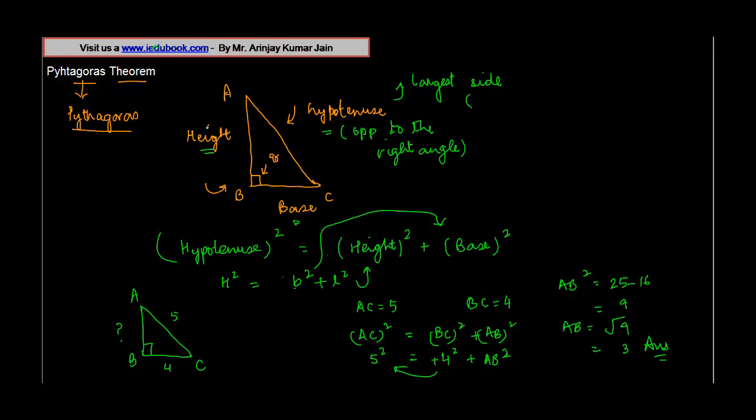So using the Pythagoras theorem in a right angle triangle, if we are told about the length of two sides, then we can find out the length of the third side. Also note that the hypotenuse is the largest side in so far as the length is concerned.